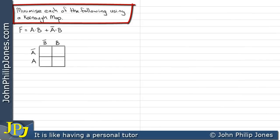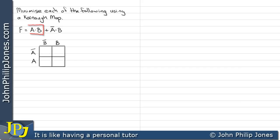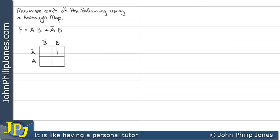We're going to minimise each of the following using a Karnaugh map. If we have a look at this minterm here, we can see we've got A and B, which relates to that particular area there. For this minterm, we've got not A and B again, which is this area. Consequently, we've put a 1 in both of those squares there. Once plotted, the next thing to do is to loop the 1s, and here we can see we have a loop of 2.